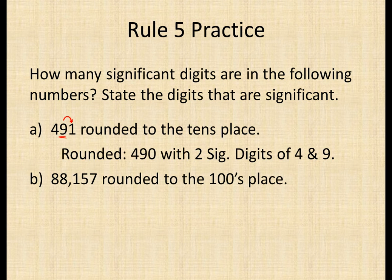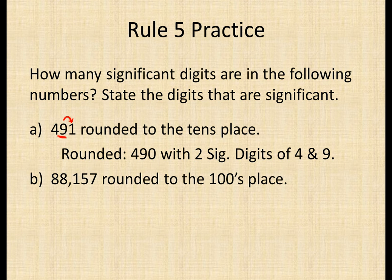Let's look at 491 rounded to the tens place. The 9 is in the tens place, so we look at the 1 and ask: is 1 five or greater? No, it's not. So our number rounds to 490. Is 491 closer to 490 or 500? It's closer to 490. So we have two significant digits: 4 and 9.